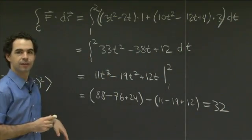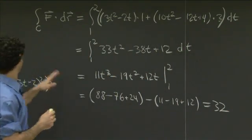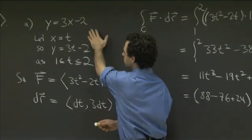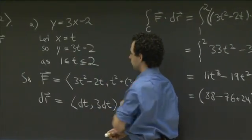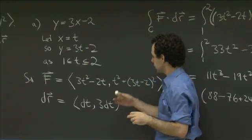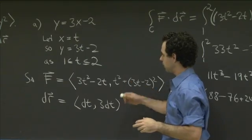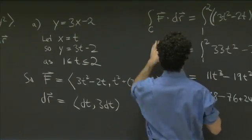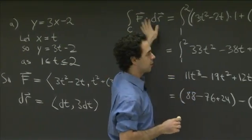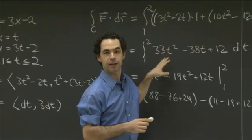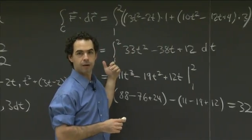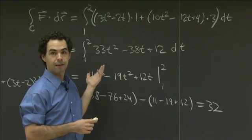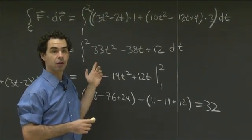So that's part A. We took a simple curve, used a simple parametrization, computed F and dr, dotted them, and integrated. Now we're going to do the same thing for part B, but the curve is a little more complicated.